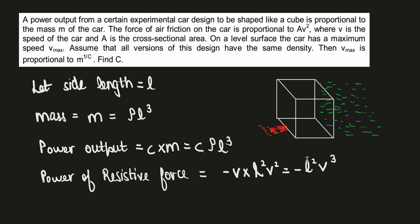So let's say this is the car, a cube of side length l. Now mass, as density is some constant, would be ρ into l³, simply density into volume.